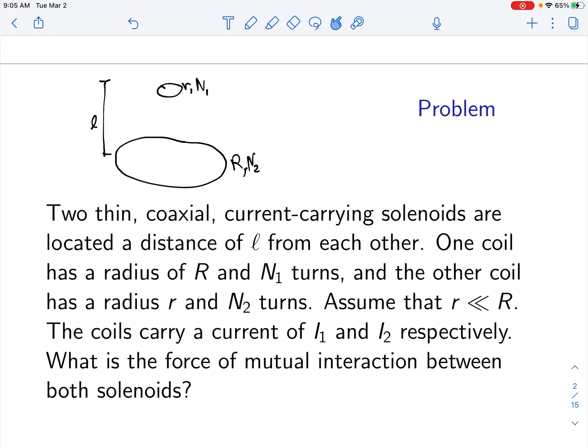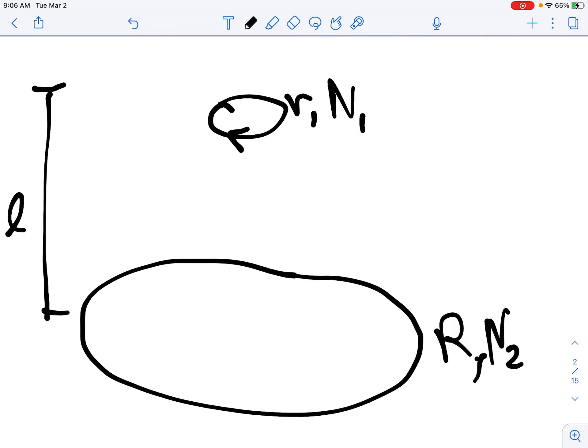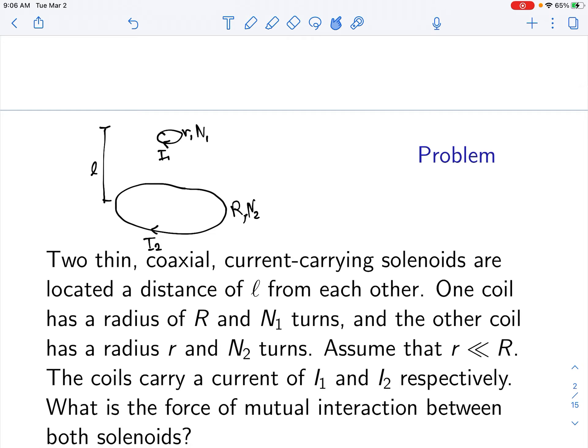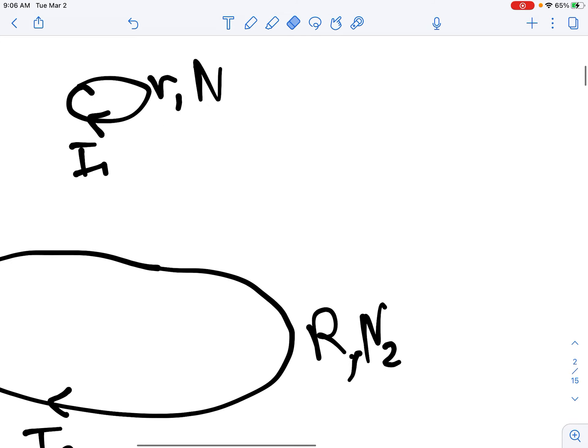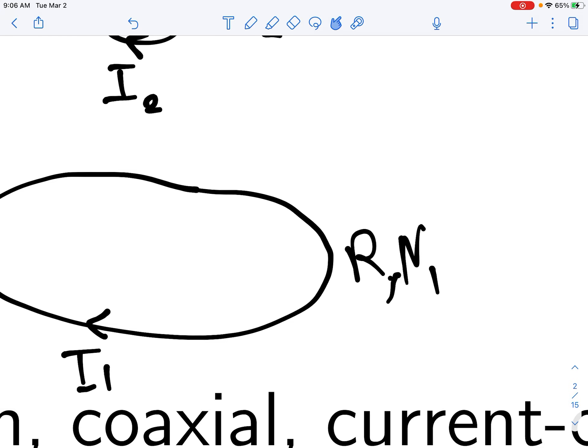So this is going to be little r and N1, and this is going to be big R and N2. And they are a distance of L from each other. We want to find the force of mutual interaction between both solenoids, given that this solenoid carries a current of I1 and this solenoid carries a current of I2. This is going to be our problem.